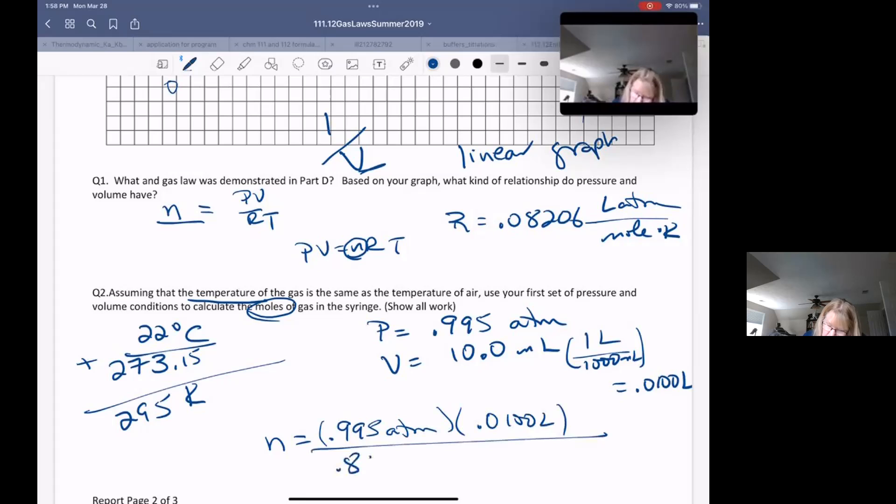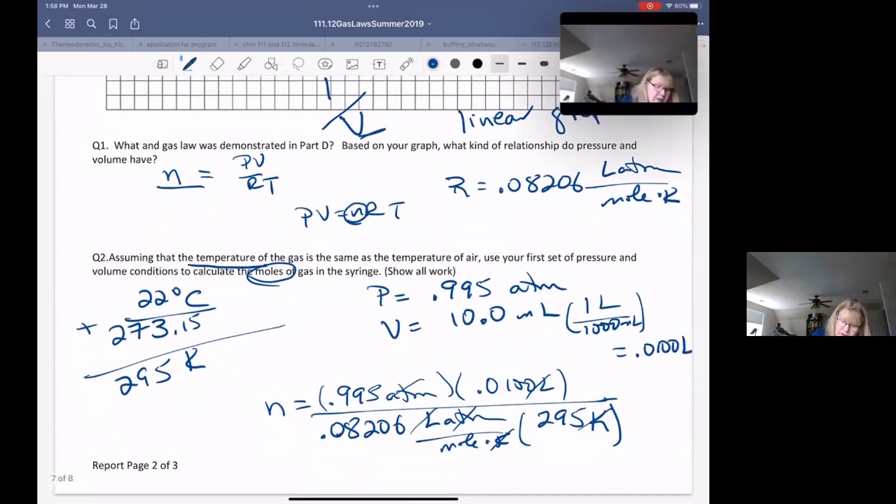Atmospheres cancel, liters cancel, multiplied by the temperature in Kelvin, which you're going to get off of your lab quest, and your Kelvins are going to cancel. The moles are going to pop up in the numerator, and this is going to give you the number of moles of gas in your sample. Again, obviously use your data.